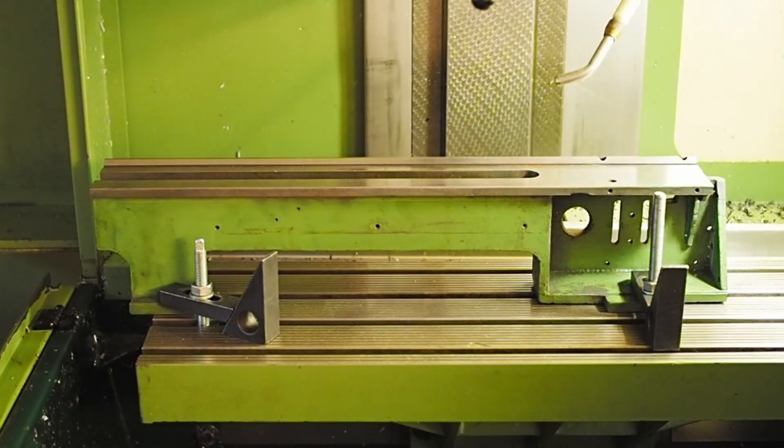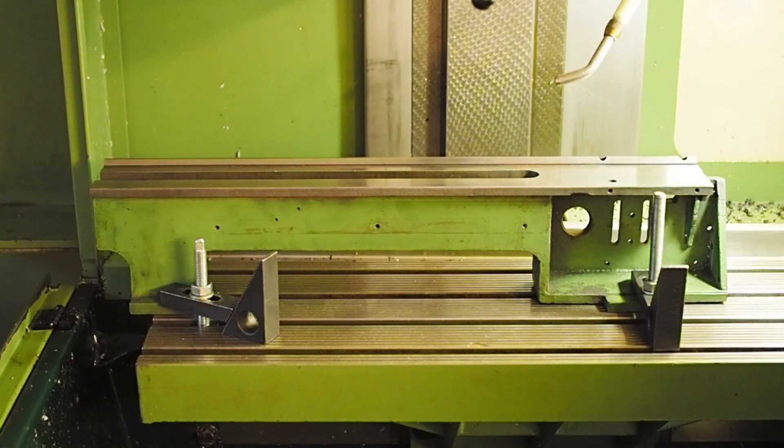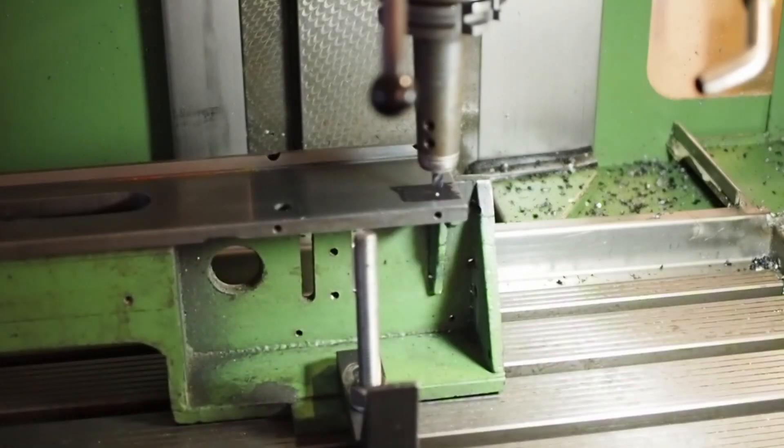Here's the mini lathe bed set up on the Maho. I'll be using it to drill that fourth mounting hole for the headstock. So first spot drilling it.